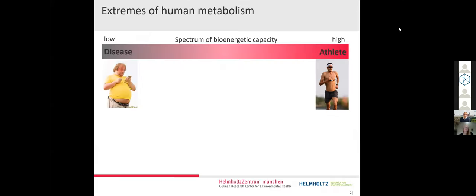So first of all, I'd like to give a brief background of the topic. We know that human metabolism is highly variable and can have extreme shapes on a spectrum of bioenergetic capacity. So the capacity, for example, to metabolize glucose or to metabolize fat.